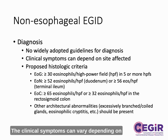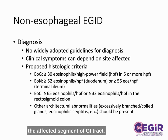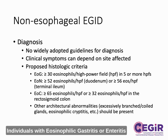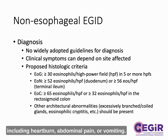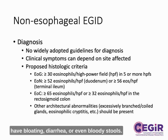The clinical symptoms can vary depending on the affected segment of GI tract. Individuals with eosinophilic gastritis or enteritis may experience similar symptoms as EOE, including heartburn, abdominal pain, or vomiting. Individuals with eosinophilic enteritis or colitis may have bloating, diarrhea, or even bloody stools.